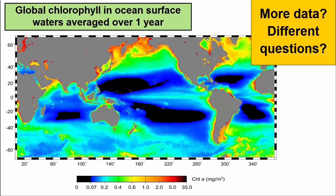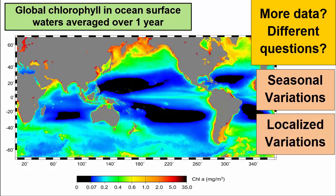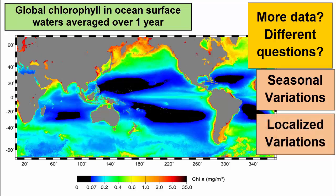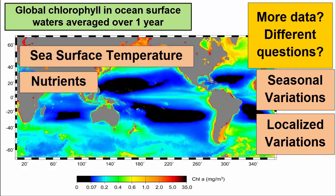Are there more data we'd like to collect? Questions we'd like to ask? If so, what? For example, in the chlorophyll map, we might ask to look at the data by season, or look at a small area in more detail. We might want to see some other datasets alongside, such as nutrient content and sea surface temperatures. These will allow us to confirm our original hypothesis or transform it into something that fits the data better.